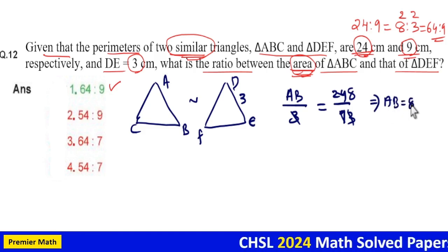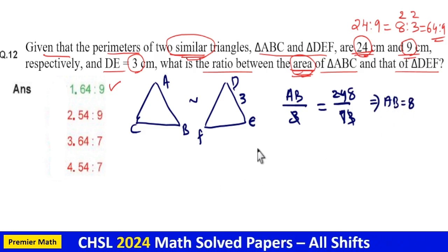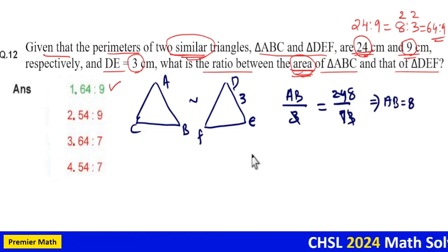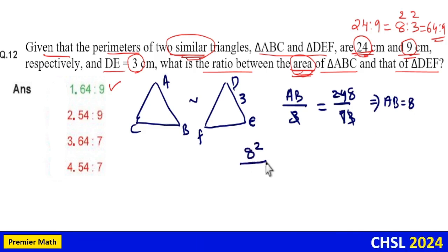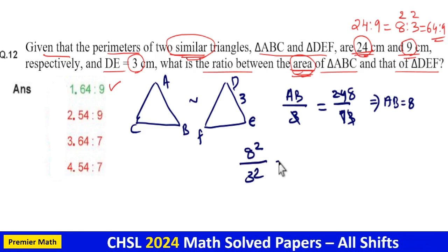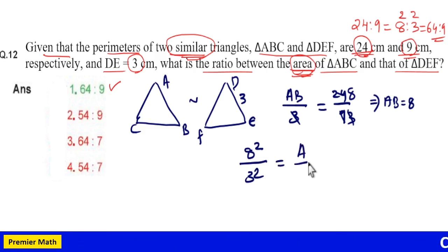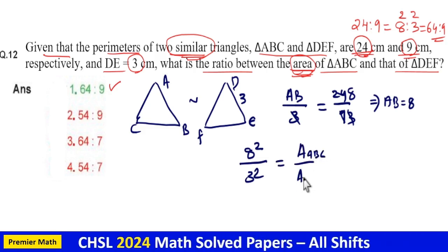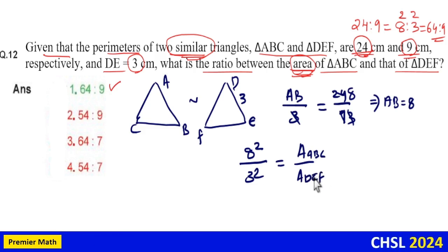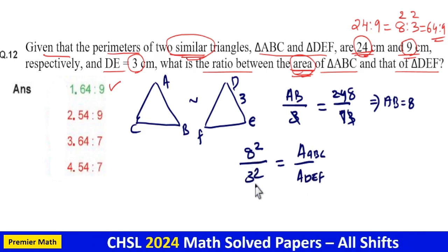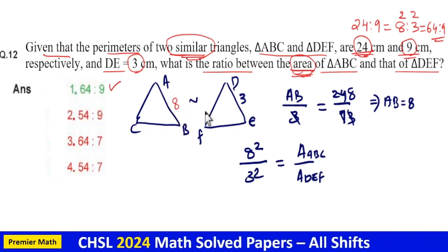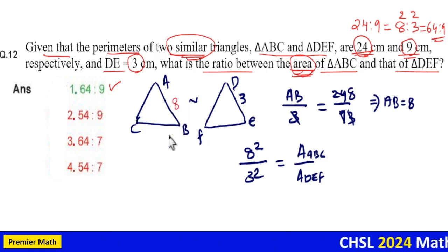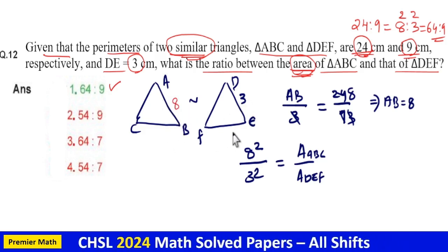AB is equal to 8 means here the ratio of corresponding sides—ratio of square of corresponding sides. That is, 8 square by 3 square is the area of triangle ABC and area of triangle DEF. That is, the ratio of their square of corresponding sides. Then 8 square by 3 square is the ratio of area of triangle ABC and DEF.